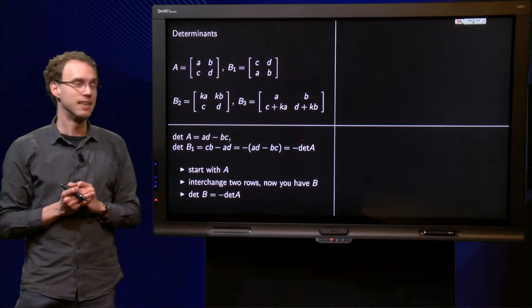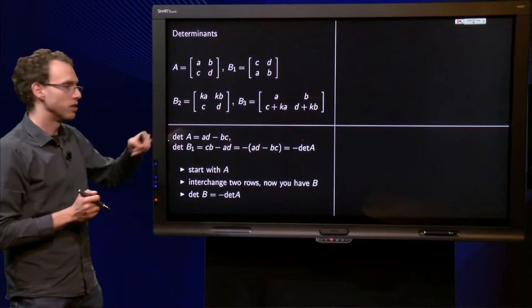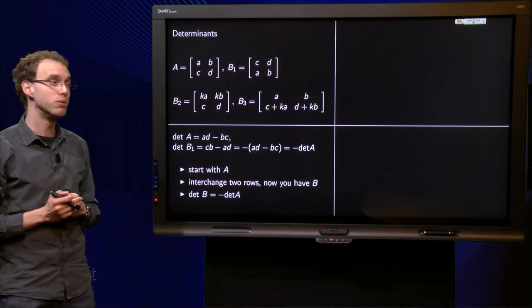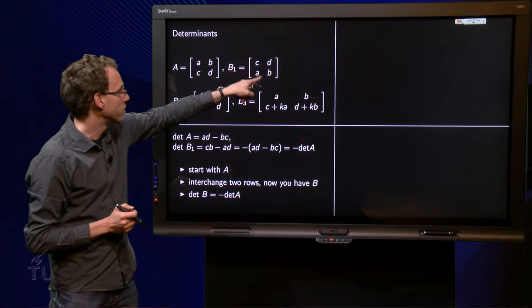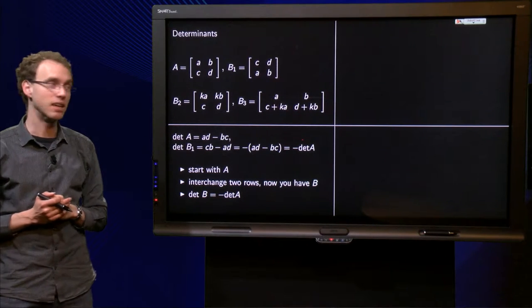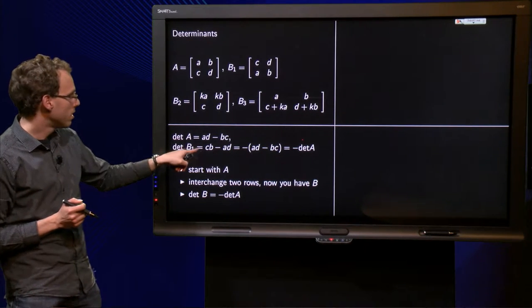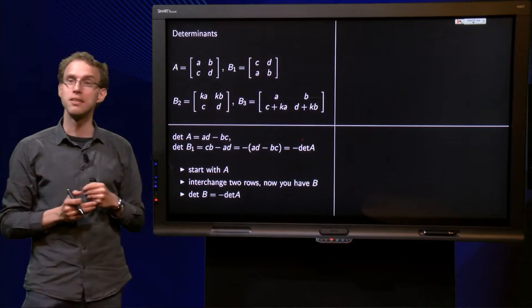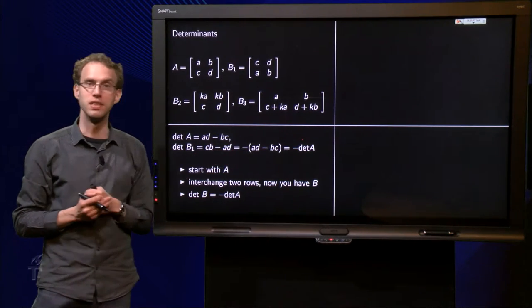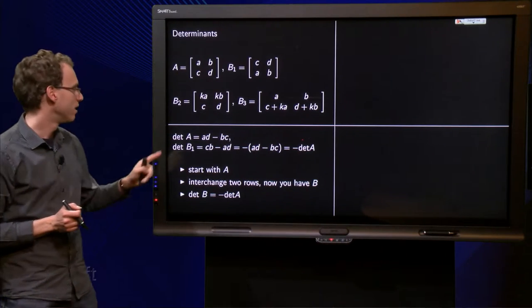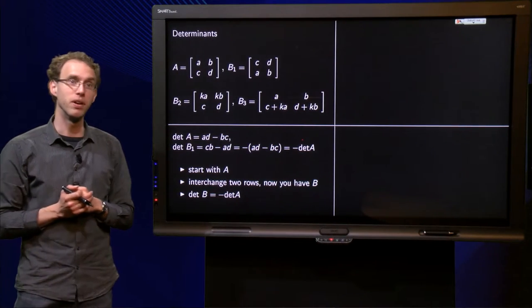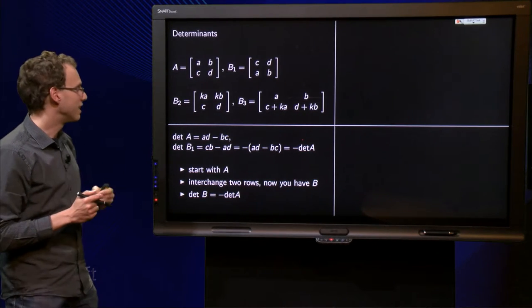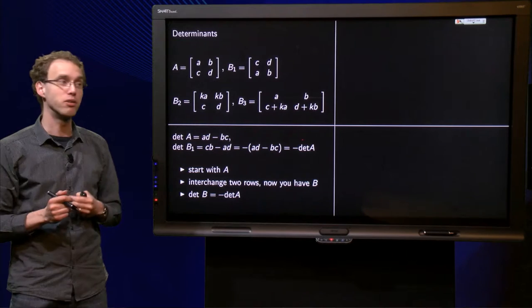Start with the matrix A. The determinant equals A times D minus B times C. Then we compute the determinant of B1 equals C times B minus A times D. Then we can take a minus sign out, and we get minus A times D minus B times C equals minus the determinant of A.